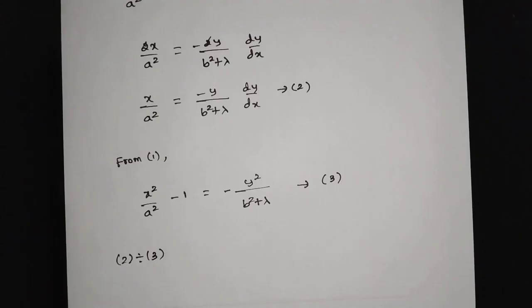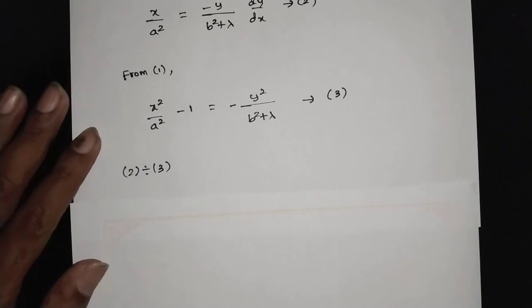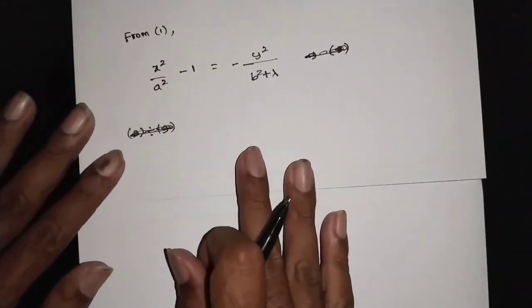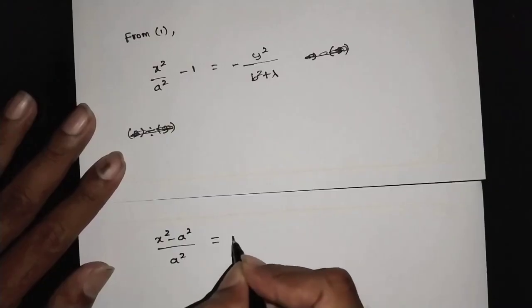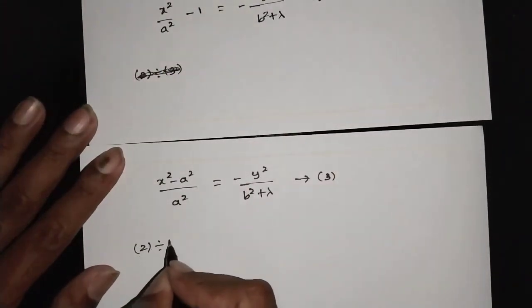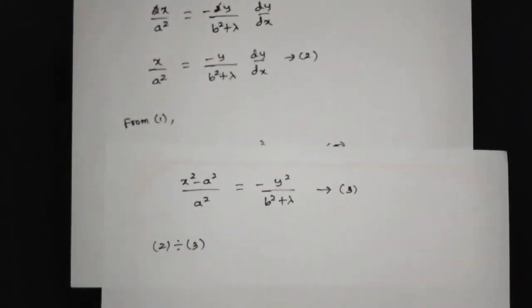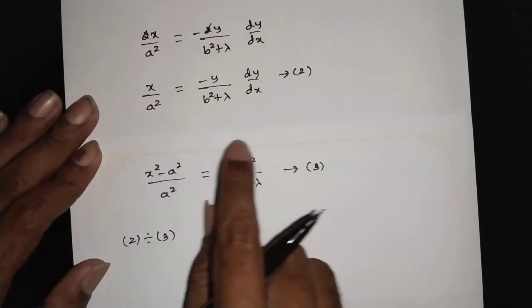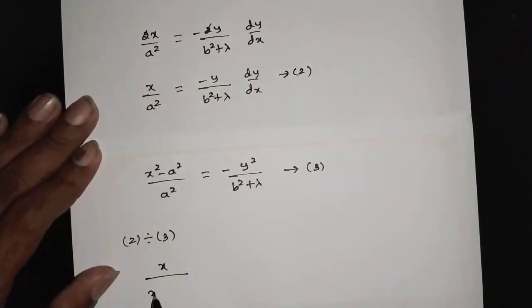Dividing equation 2 by equation 3: x by a squared divided by x squared minus — after cancellation the 2s cancel and this simplifies, so x squared minus x squared terms cancel out in the process.